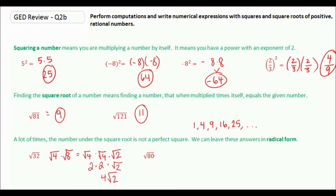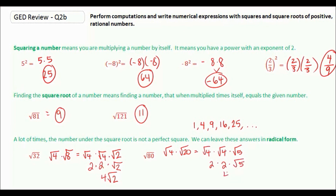For root 80, root 80 equals root 4 times root 20. Root 20 would be root 4 times root 5. So this gives us 2 times 2, leaving root 5, and our answer is 4 root 5.